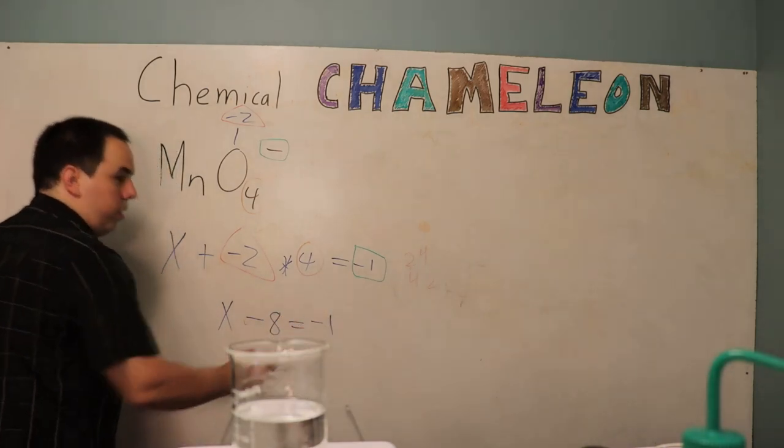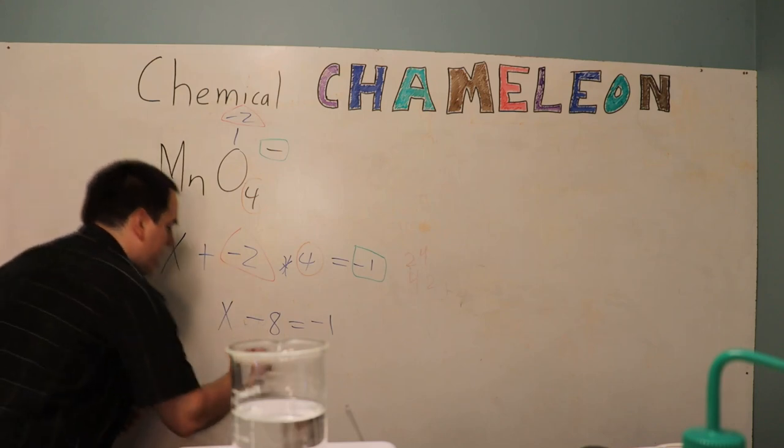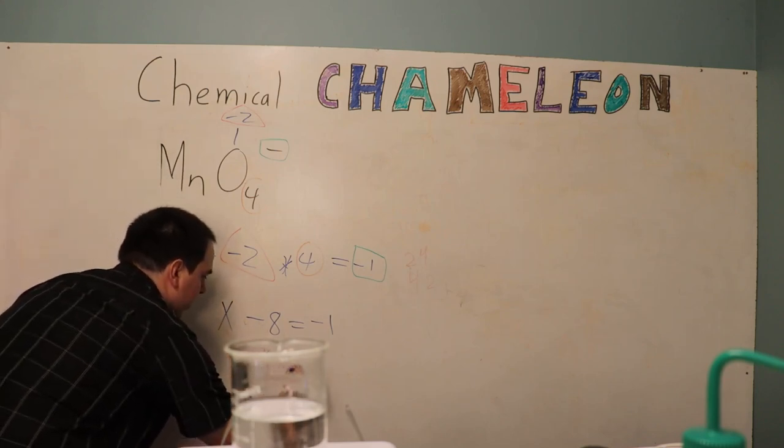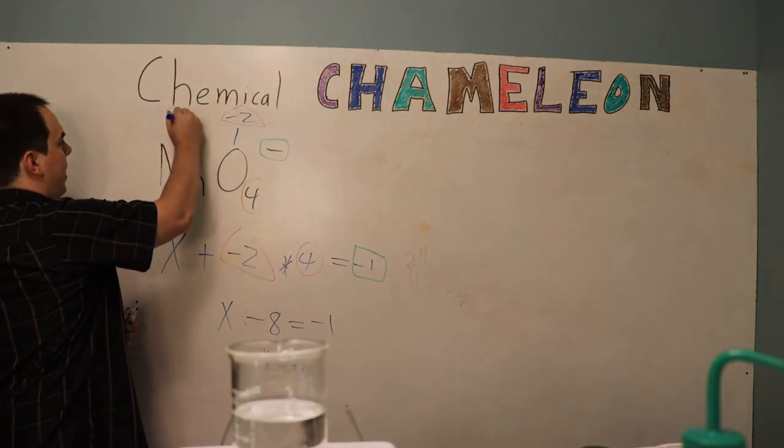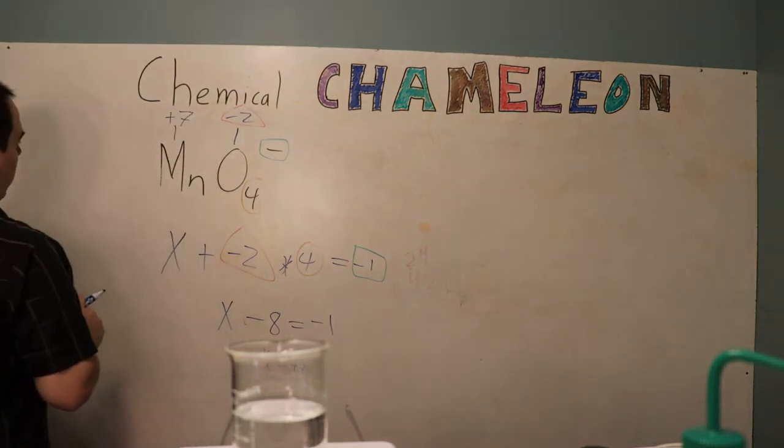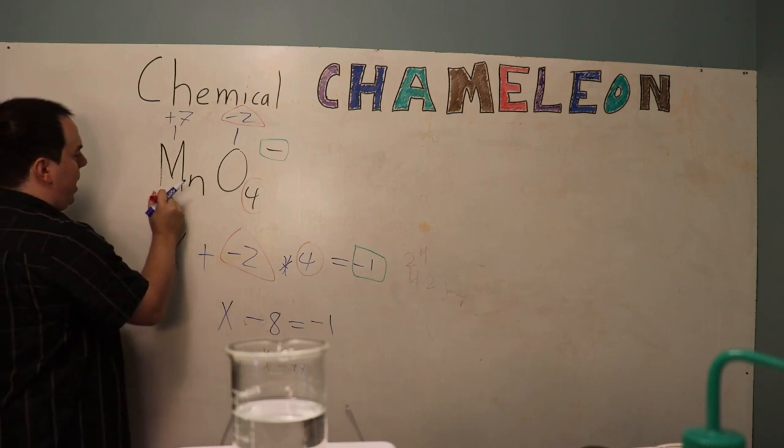We can bring the 8 over to the other side by adding 8 to both sides and we'll have x is equal to positive 7. So we know the oxidation state of manganese is positive 7 which will give a purple appearance.